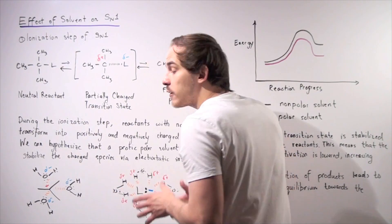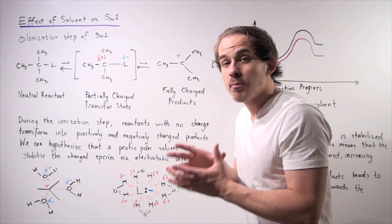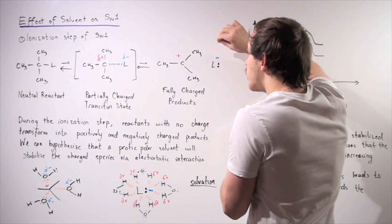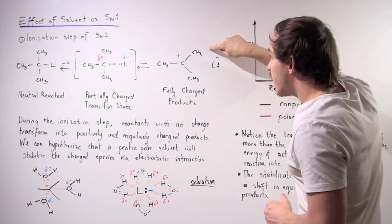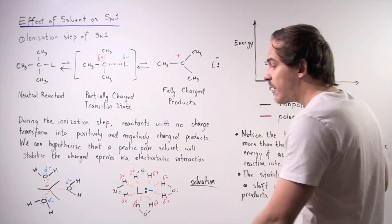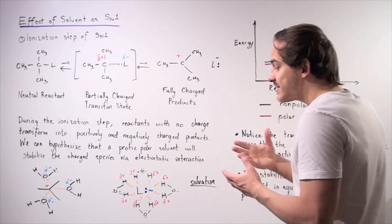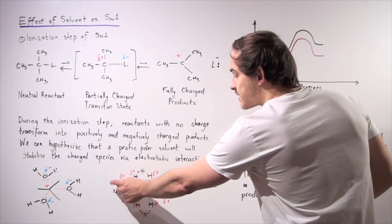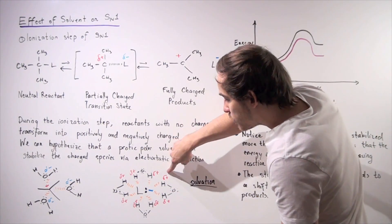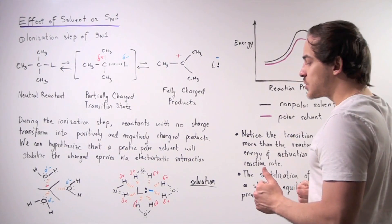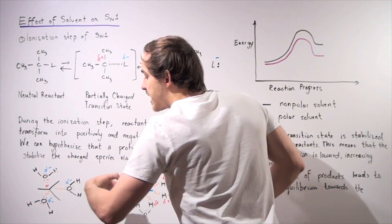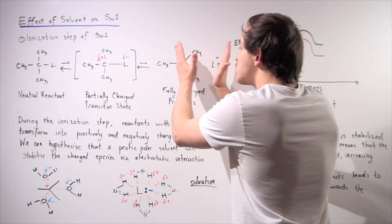These interactions are very stabilizing. Our polar solvent acts to stabilize our products because they have charges. Likewise, for the leaving group, which has a negative charge, the water orients its H atoms — which carry the partial positive charges — toward the leaving group, stabilizing that negative charge via electrostatic interaction. So both the carbocation and the leaving group are stabilized.